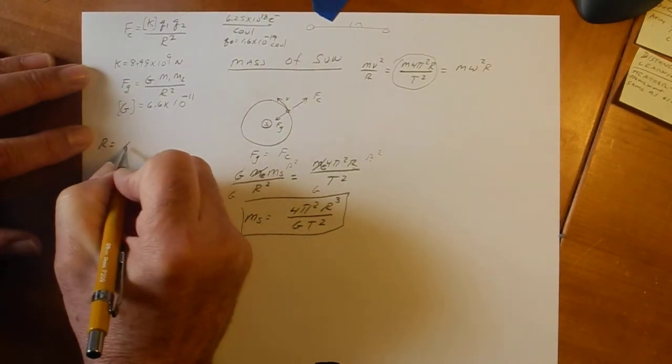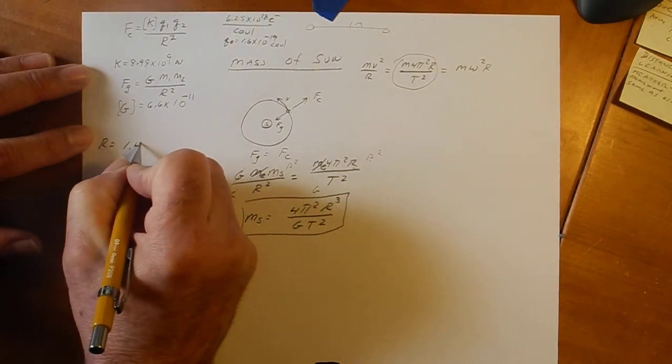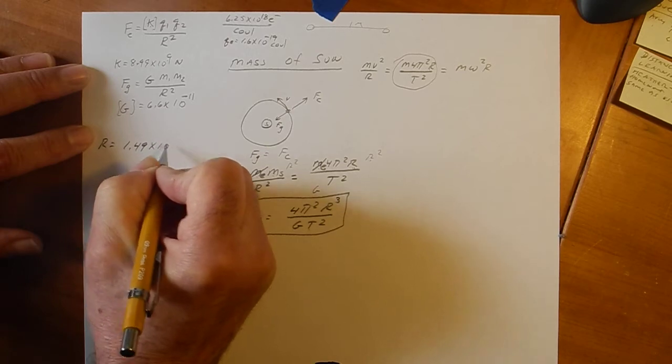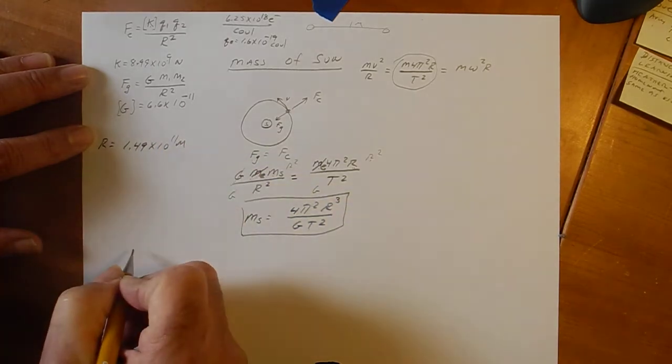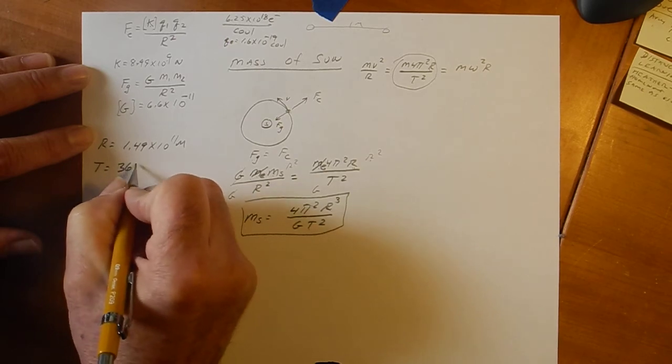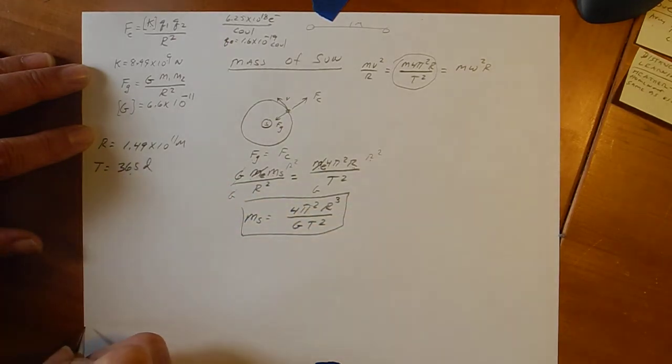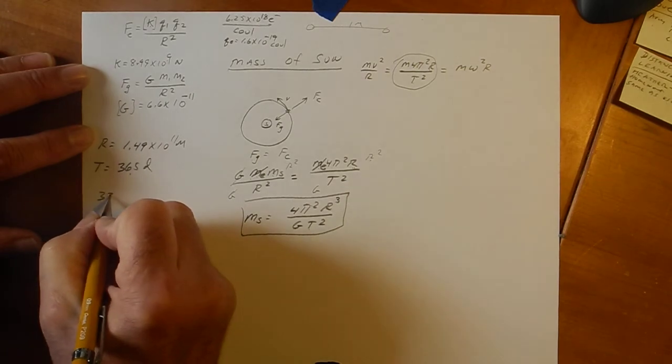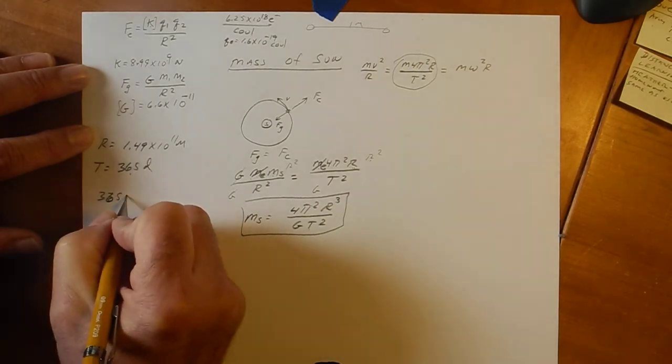So, R for this problem is 1.49 times 10 to the 11th meters. And the time it takes to make a lap is 365 days. That's a year. We can't use that number because it's not MKS.